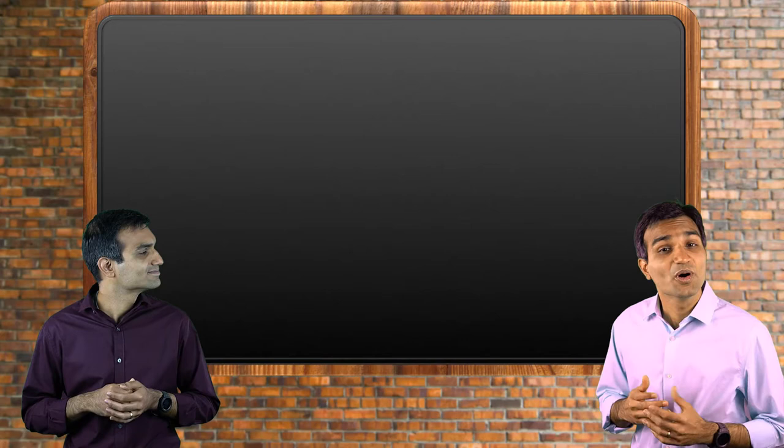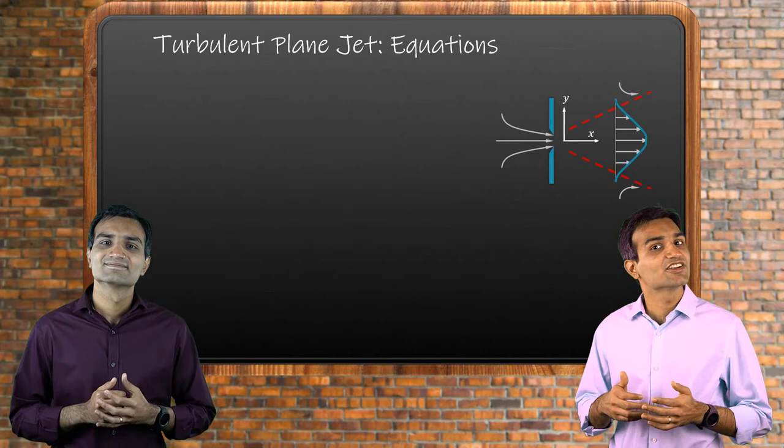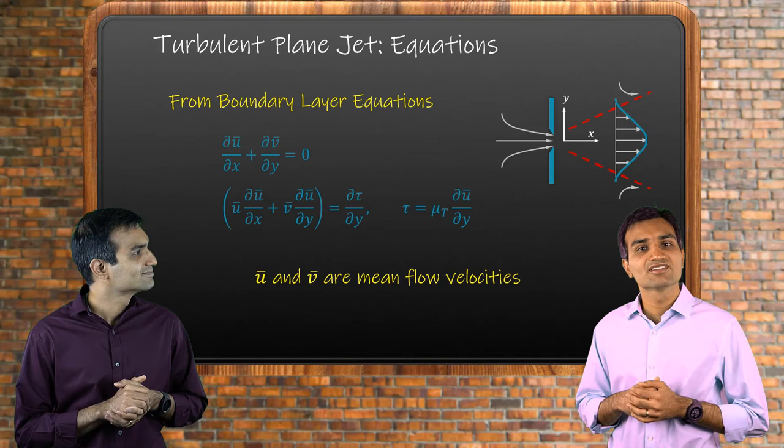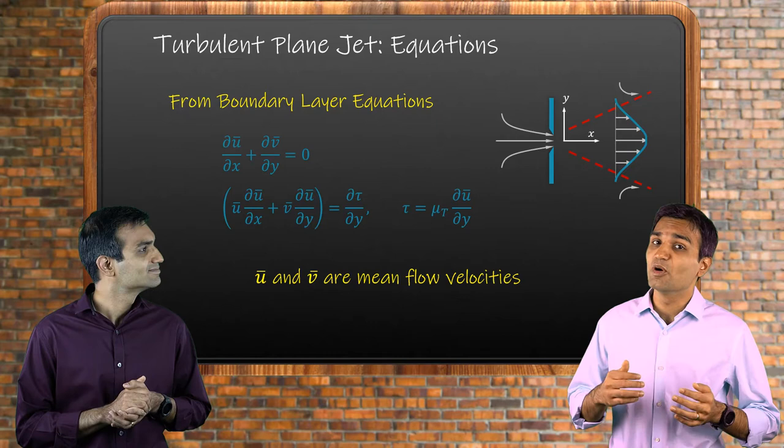To understand the behavior of turbulent jets, we use mean jet velocities instead of actual. The boundary layer continuity and momentum equations are slightly modified. We have a shear term in the momentum equation which is related to the turbulent eddy viscosity of the fluid.